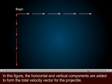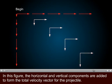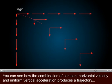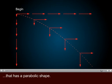In this figure, the horizontal and vertical components are added to form the total velocity vector for the projectile. You can see how the combination of constant horizontal velocity and uniform vertical acceleration produces a trajectory that has a parabolic shape.